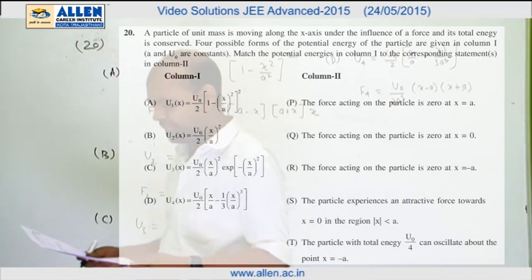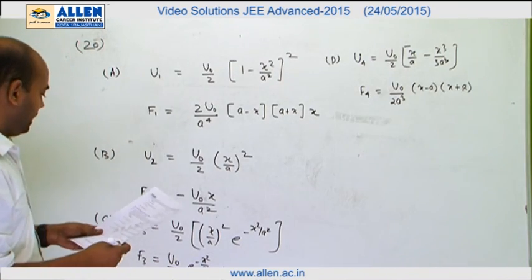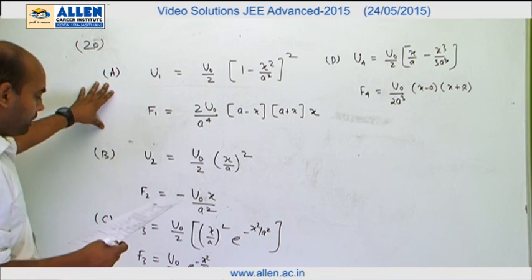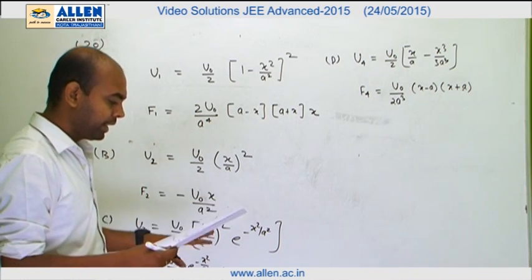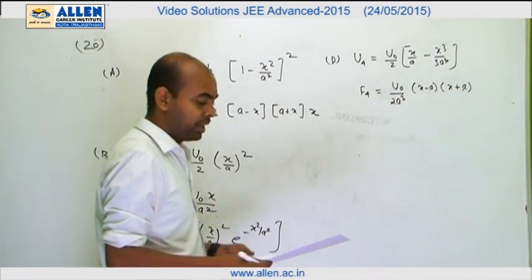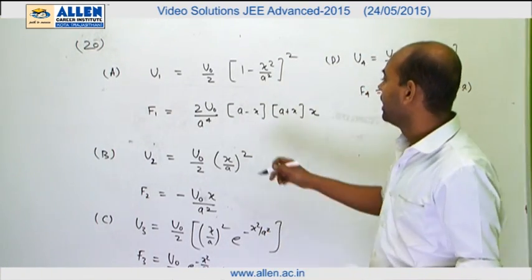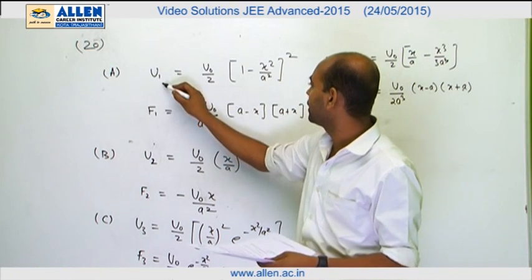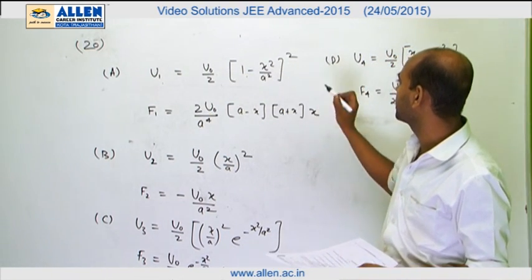Question 20 is based on a simple concept but is a bit calculative because you have to differentiate equations in physics. They have given the potential energy for different scenarios and asked about equilibrium points and whether oscillation will occur.